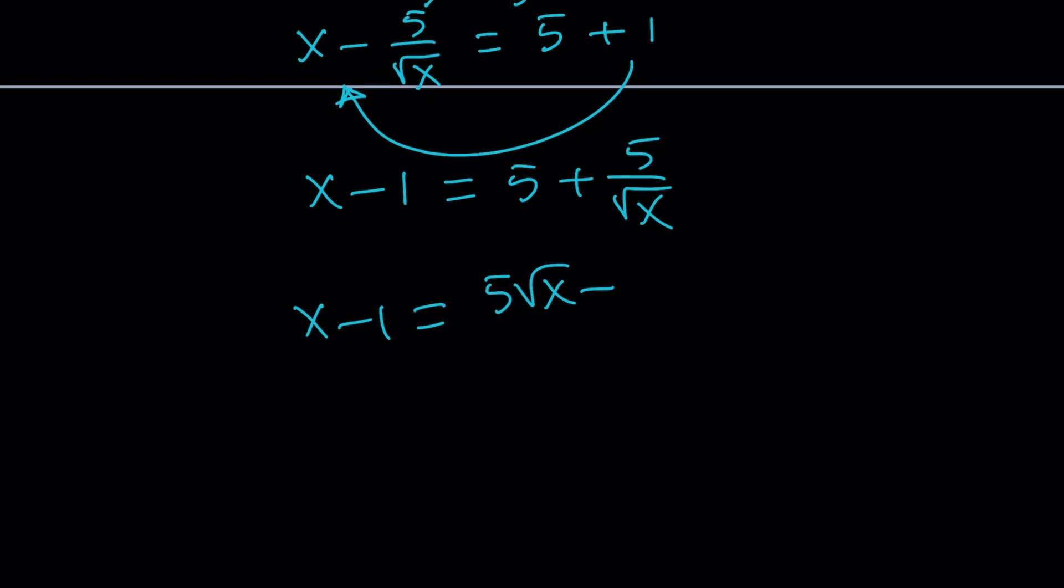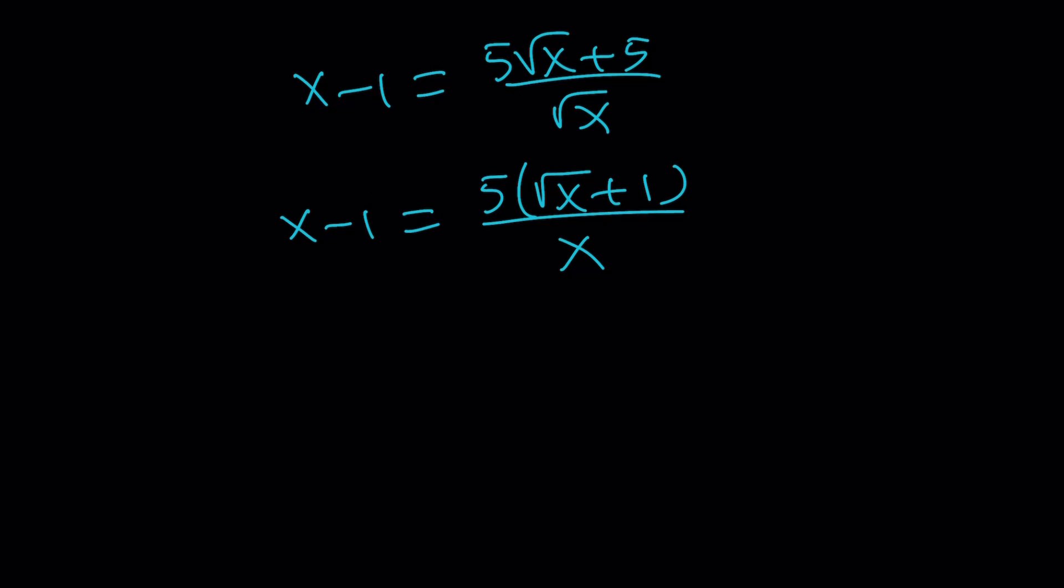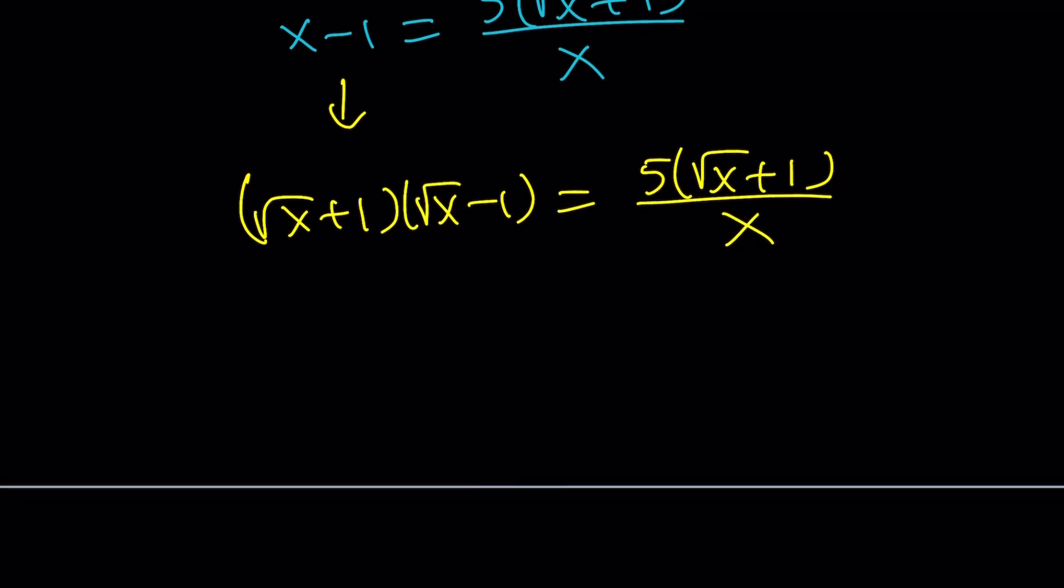And then I'm going to factor out a 5. And I realize square root of x plus 1 is a factor of x minus 1. How so? By difference of two squares. If you consider this to be square root of x squared minus 1 squared, it's factorable into square root of x plus 1 times square root of x minus 1. And then this is 5 times the square root of x plus 1 divided by x. One thing to keep in mind, x is real. So square root of x is always greater than or equal to 0. So this is positive. This is positive. Therefore, it can go away. We can cancel out. It can't be 0. So now we get the following. Square root of x minus 1 equals 5 over x.